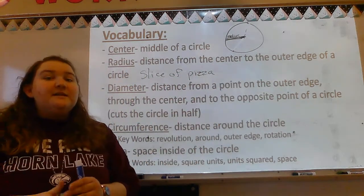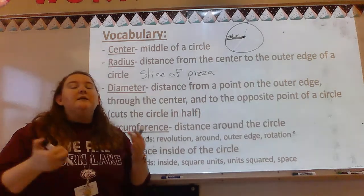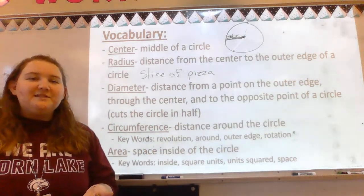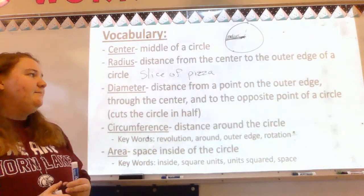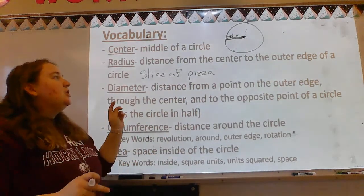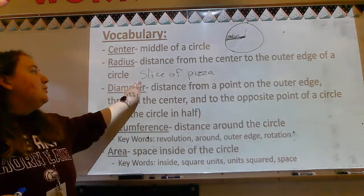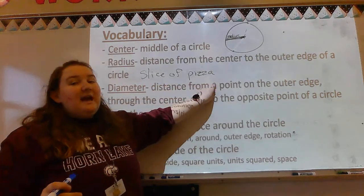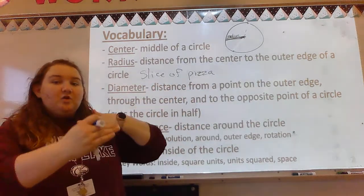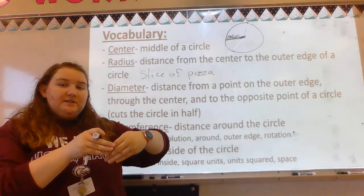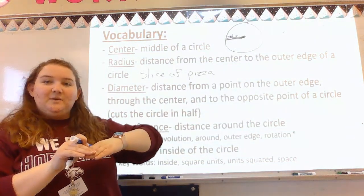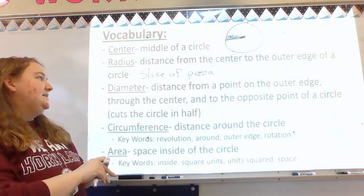Pizza typically comes in a circle. When it comes in a circle, the radius is like having a slice of pizza — it goes from the crust to the center. That's your radius, your slice of pizza.